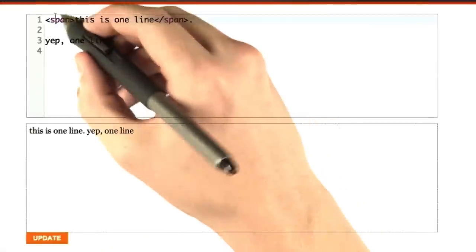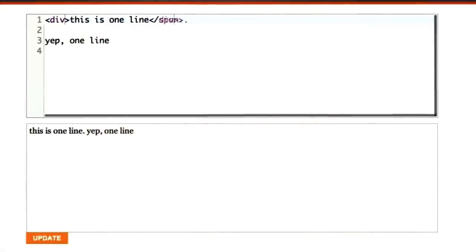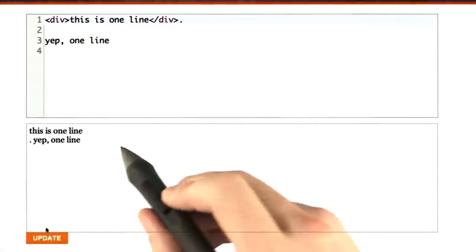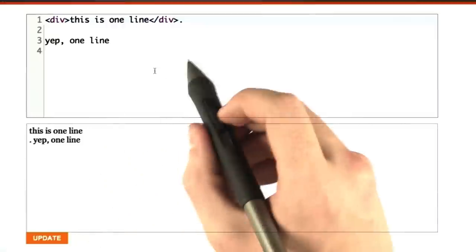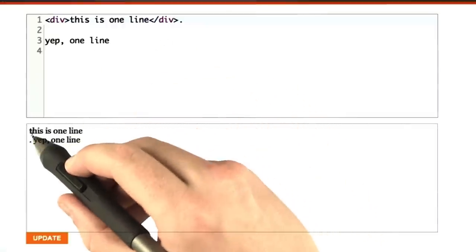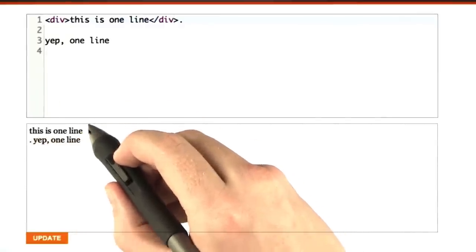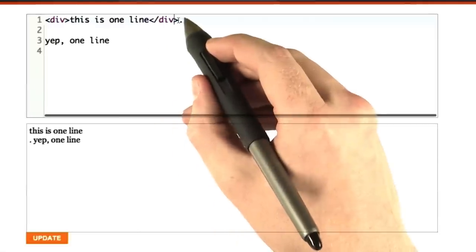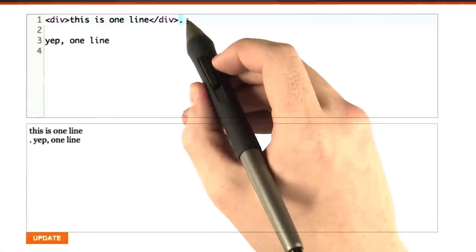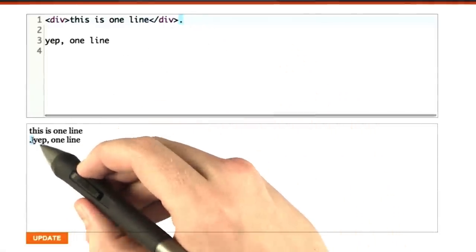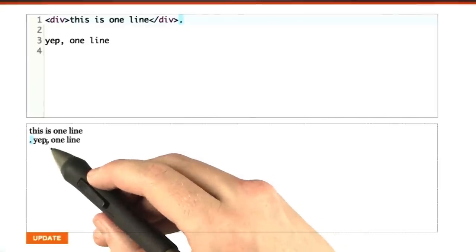Now, if I were to change this span to a div, it behaves more like how the paragraph tag before behaved. This div actually creates a box around this piece of text. And you can see we actually did something interesting. I added a little period after the div, and the period appears down on the second line here.